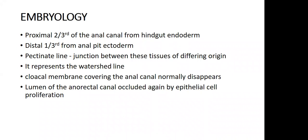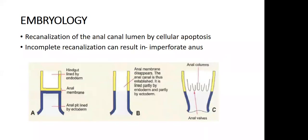The pectinate line is the junction present between these two tissues of different origin, and it represents the watershed line. Normally, the cloacal membrane covering the anal canal disappears, and because of re-epithelialization, the anorectal canal becomes occluded. Re-canalization of the anal canal occurs by cellular apoptosis. Any incompleteness in re-canalization results in incomplete anal canal — an imperforate anus. The image in this slide shows the hindgut derived from endoderm and the anal pit lined by ectoderm.